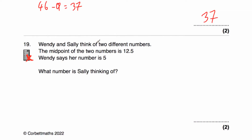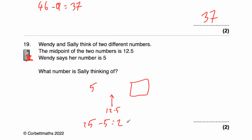Question nineteen: Wendy and Sally are thinking of two different numbers. The midpoint is 12.5 and Wendy's number is 5. We can multiply the midpoint by 2: 12.5 times 2 is 25, then 25 minus 5 is 20. So Sally's number is 20. Alternatively, to get from 5 to the midpoint we add 7.5, so adding another 7.5 gives 20.